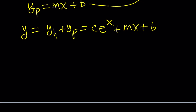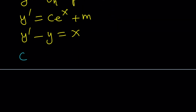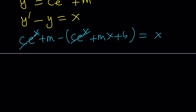Now we're going to plug this into our original equation. First, differentiate both sides: y prime is c·e^x plus m. Then plug into y prime minus y equals x: we replace y prime with c·e^x plus m, and subtract y, which is c·e^x plus mx plus p. This should equal x. The c·e^x terms cancel, and we get negative mx plus m minus p equals x.